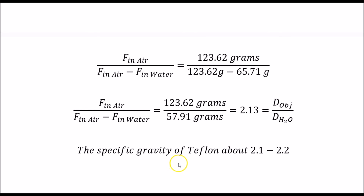So the specific gravity is 2.13, meaning this object has a density of about 2.13 — which is high for a plastic. Looking up specific gravities, Teflon has the highest of most polymers, and it falls in the range of 2.1 to 2.2. This object felt like Teflon — it had a smooth, slick surface — and the agreement is very good. I hope that's clear, and I'll see you next time.